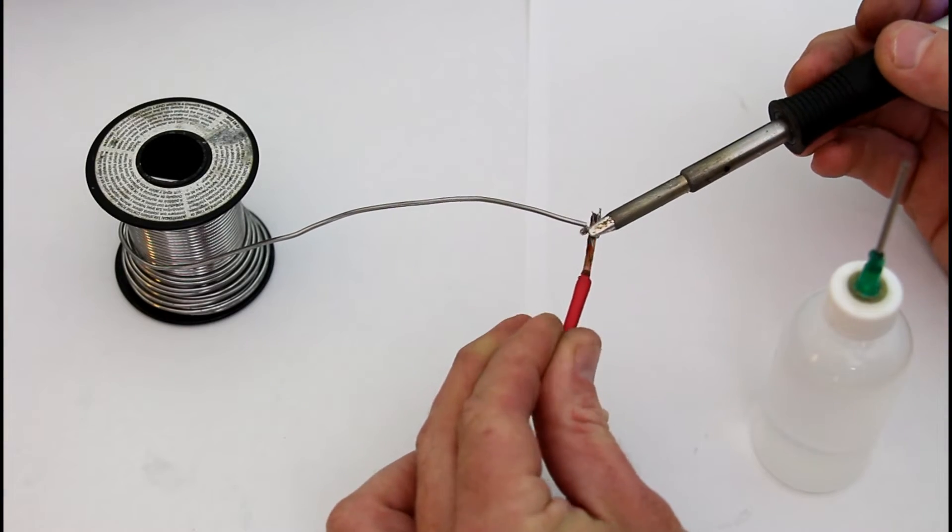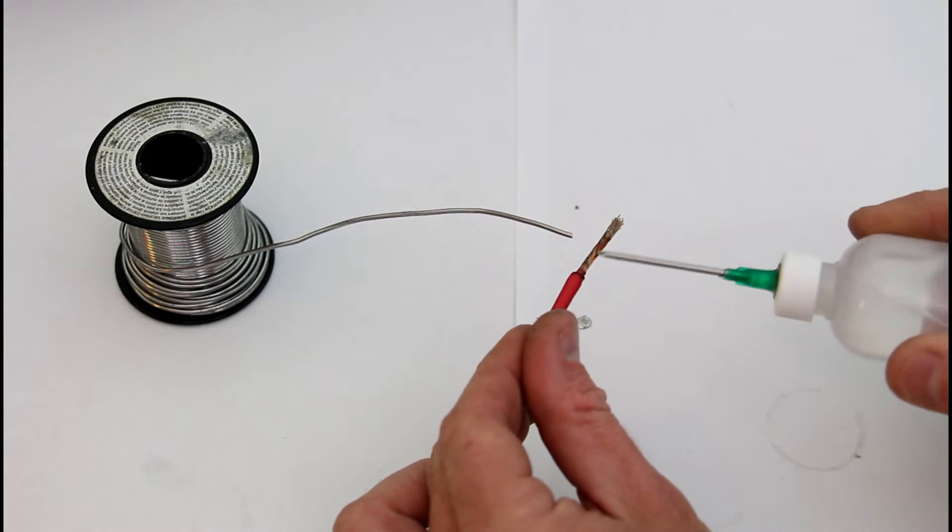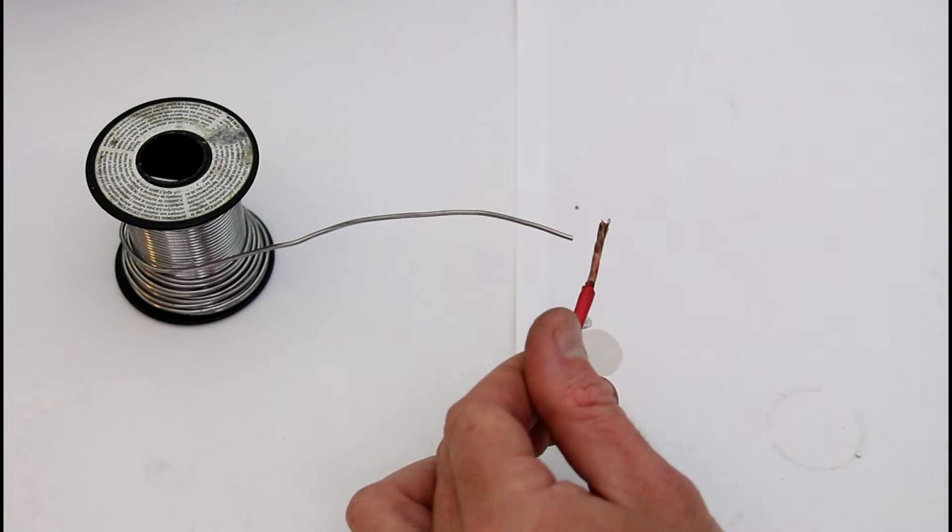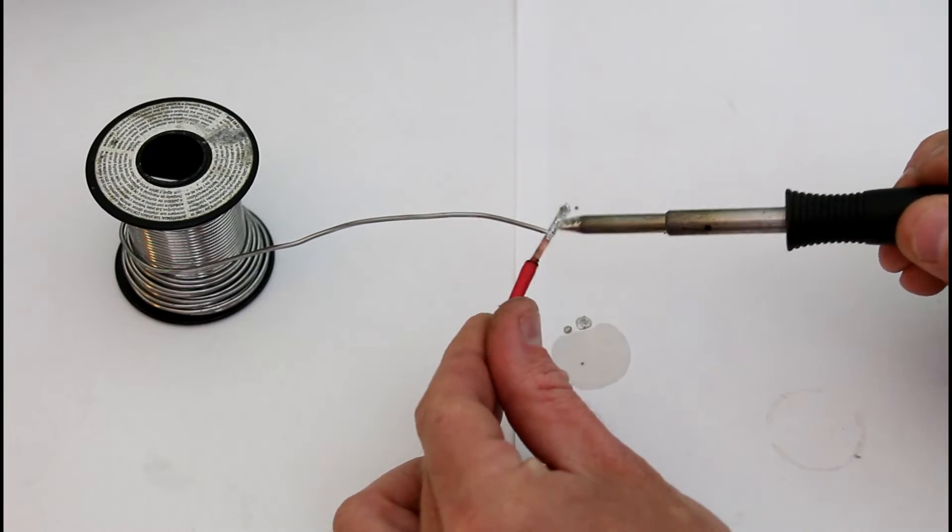Speed Flux also works excellent on corroded copper. As you can see this corroded wire won't take solder, but add a little Speed Flux and it takes solder readily.